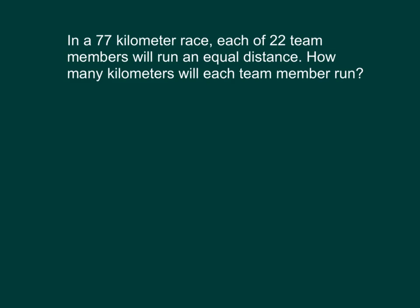In a 77-kilometer race, each of 22 team members will run an equal distance. How many kilometers will each team member run?